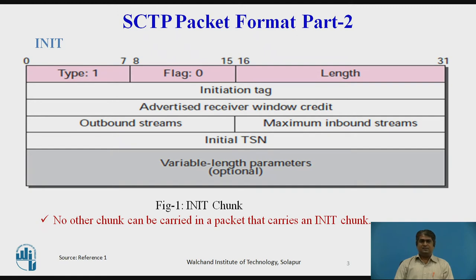Outbound Stream: This 16-bit field defines the number of streams that the initiator of the association suggests for streams in the outbound direction. Maximum Inbound Stream: This 16-bit field defines the maximum number of streams that the initiator of the association can support in the inbound direction. Initial TSN: This 32-bit field initializes the transmission sequence number (TSN) in the outbound direction. Note that each data chunk in an association has one TSN. The value of this field is also a random number less than 2^32.